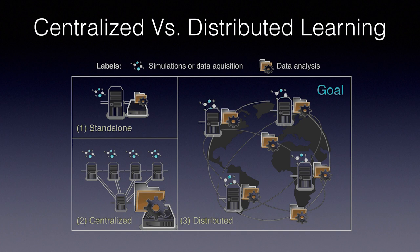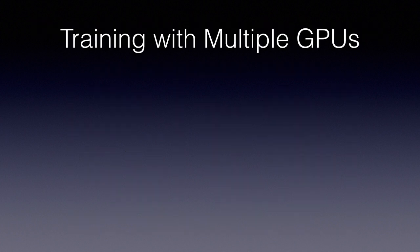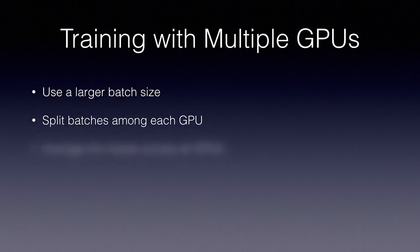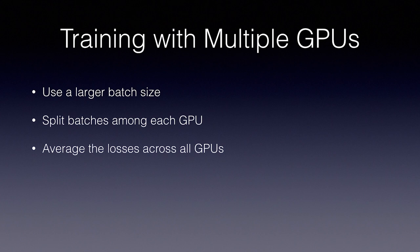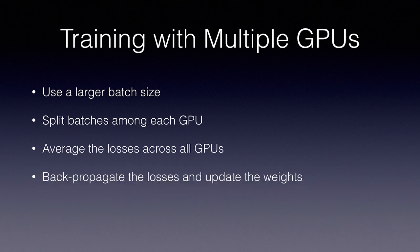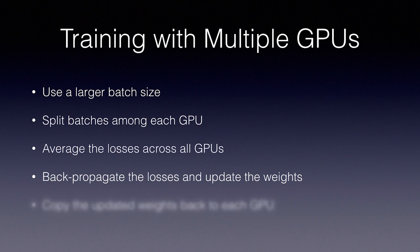Before we go too deep into federated learning, let's look at how distributed learning works in general. Even if there are no privacy concerns and you control all your training data, there comes a point where training on a single machine is no longer practical. Running deep learning efficiently at scale is actually a discipline of its own. The easiest way to start scaling is to simply train with multiple GPUs. You can simply use a larger batch size and split batches among each GPU. You then concatenate the losses from each GPU's many batches and average them. A single GPU then computes gradients from the combined losses and runs the optimizer to update the weights of the master network. The latest weights are then copied to each GPU for the next training cycle.